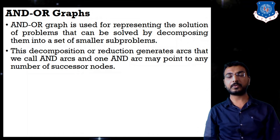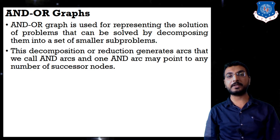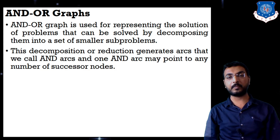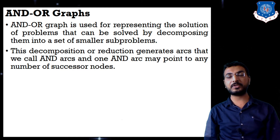In previous scenarios, such as best-first search, we used OR graphs where all nodes are connected by OR edges. In an AND-OR graph, nodes can be connected by both AND edges and OR edges. If nodes are connected by AND edges, then both nodes must be traversed.